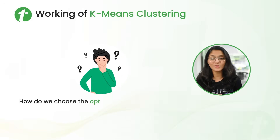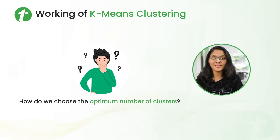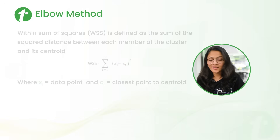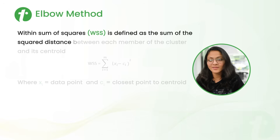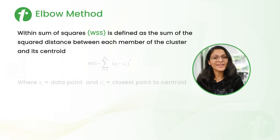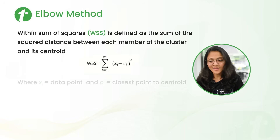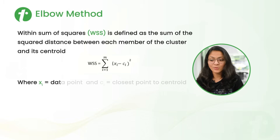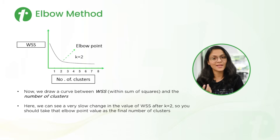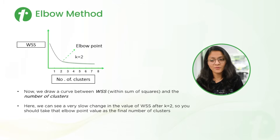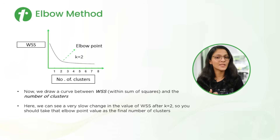Now the question arises: how do we choose the optimum number of clusters? The answer is we use the Elbow method. There is a term WSS — Within Sum of Squares — defined as the sum of squared distances between each member of the cluster and its centroid, represented as: sigma from i=1 to m of (xi − ci)², where xi is a data point and ci represents the closest centroid. We plot the curve between WSS and number of clusters, and observe that after some point the graph changes very slowly — that point is chosen as the value of K. In this case, we choose K as 2.